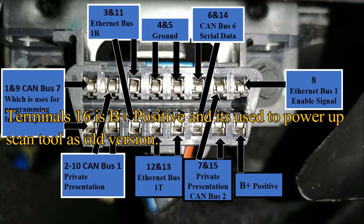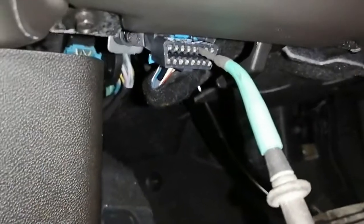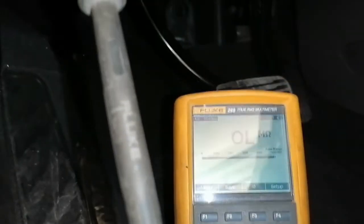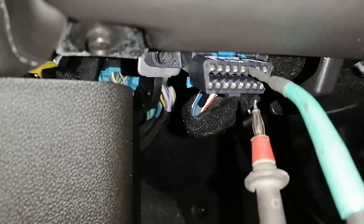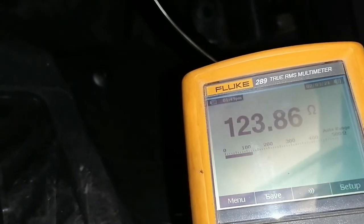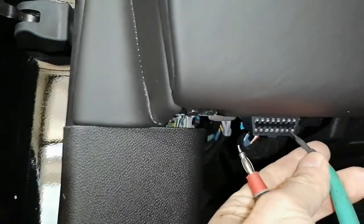Now let's use a multimeter to measure the resistance on pin 6 and 14. Of course, the ignition must be off to measure the resistance. This is pin 6, and now I'm going to measure at pin 14. The resistance reading is 123 ohms. This is the normal characteristic on Global B system — the datalink connector is connected directly to the serial data gateway module.